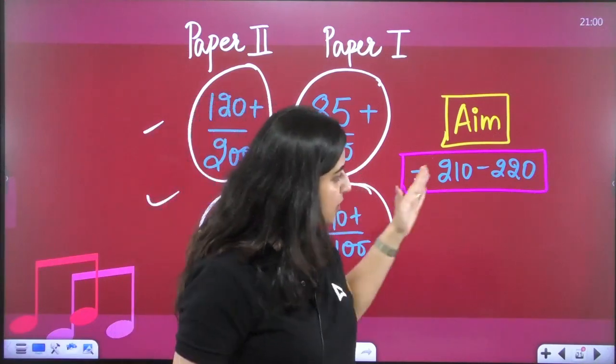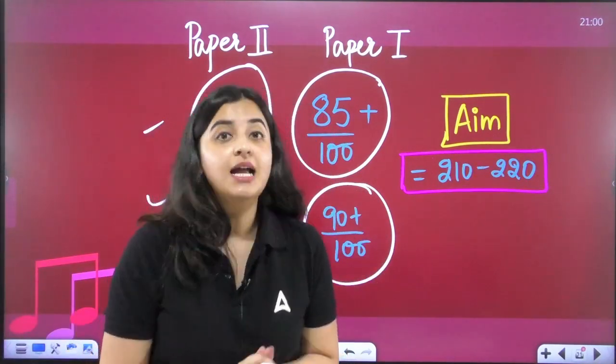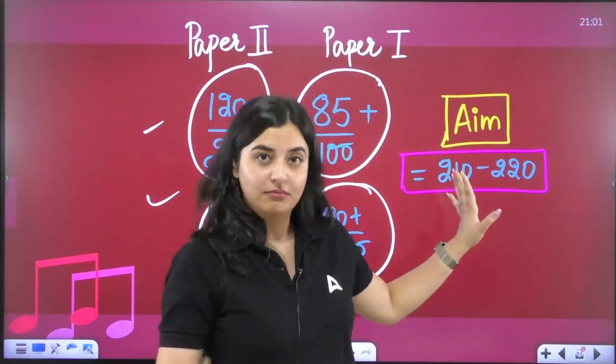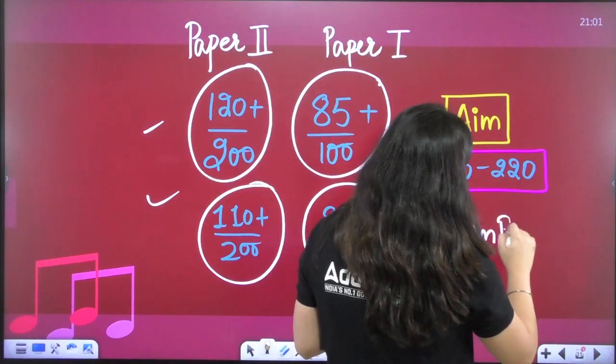So, you have to aim for 210-220 marks. You have to do the same way. And, again, I will tell you, to keep a plan B in mind. You have a June attempt.